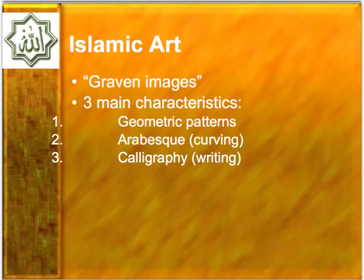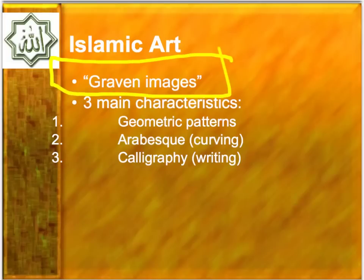The concept of a graven image — Muhammad was very much against idols, because within the context of the society he was working in, this was a polytheistic society before him. He was very concerned that people were going to go back to that style of worship. So it's a very anti-idol type of worship. You're not going to see a picture of Muhammad or statues of Moses or Jesus. That's just not part of the religion.